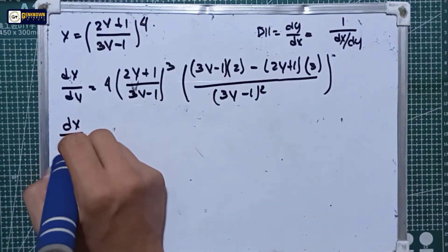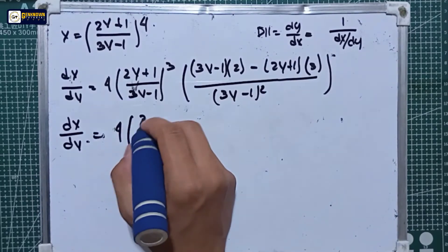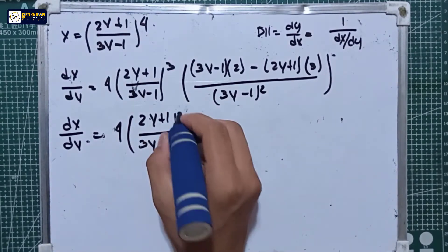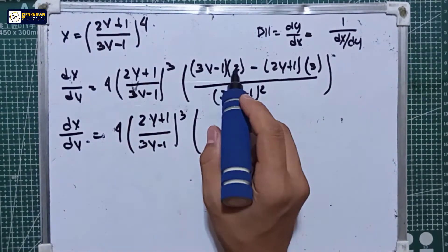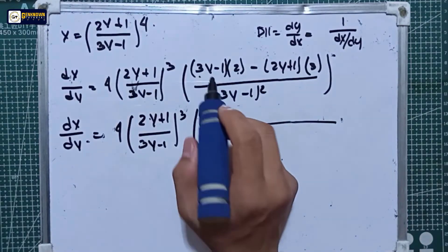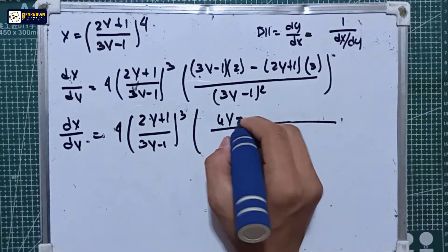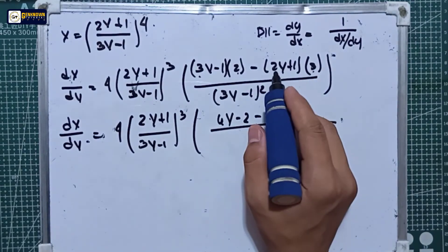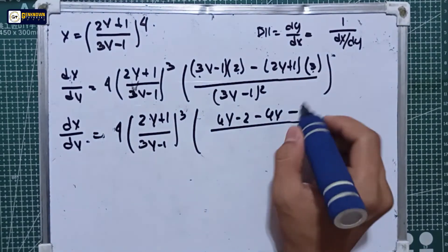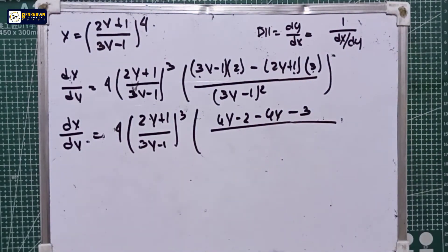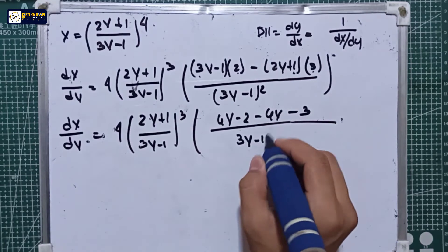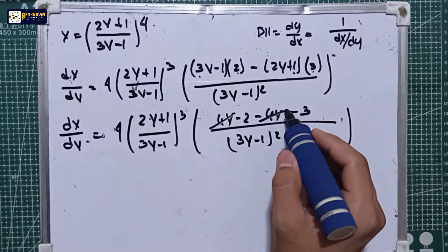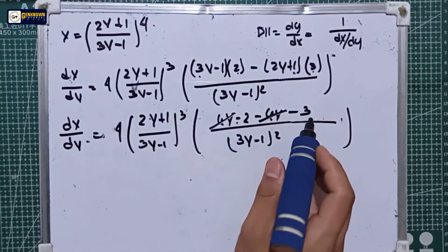Simplifying, dx/dy equals 4 times (2y + 1) over (3y − 1) raised to the 3rd, multiplied by [2 times (3y) is 6y minus 2, minus 3 times (2y) is 6y, minus 3, all over (3y − 1) squared]. The 6y terms cancel — 6y minus 6y equals 0 — leaving negative 5.